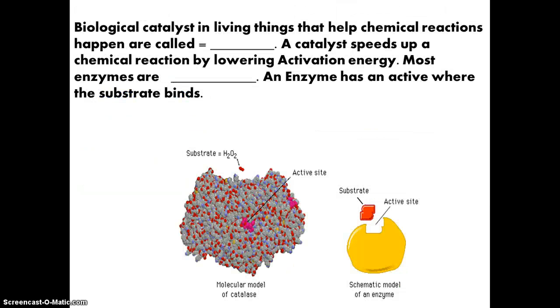So biological catalysts that we call enzymes, speed up that chemical reaction by lowering that activation energy. And most enzymes are proteins. Now, there's an exception where we have an enzyme that's RNA, and we'll talk about that next semester. So an enzyme basically has an active site. An active site is basically an area where the substrate, and the substrate is basically the reactant, binds to the active site. And when it binds to the active site, then the reaction occurs.